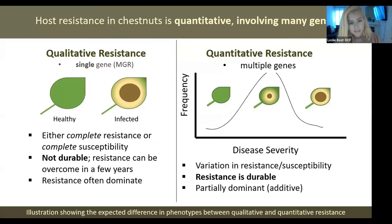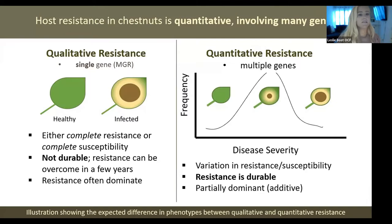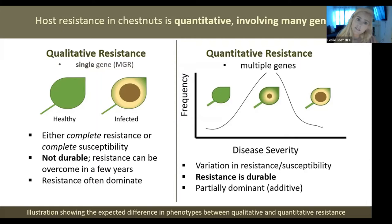Resistant trees exist, but sometimes they're not in close enough proximity to actually breed with each other, so there needs to be intervention. There are two different types of host resistance a plant can have: qualitative resistance, which is like a single gene or major gene resistance, and then there's quantitative resistance, which is the action of multiple genes contributing to the overall resistance of the tree. With Ozark chinquapin, thankfully, we have quantitative resistance.